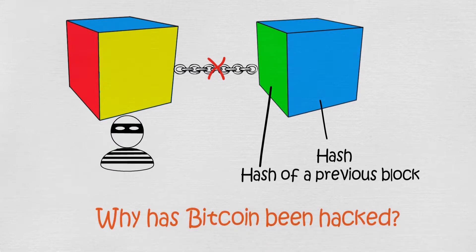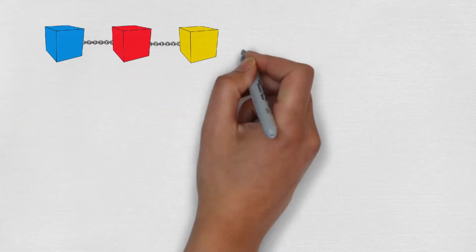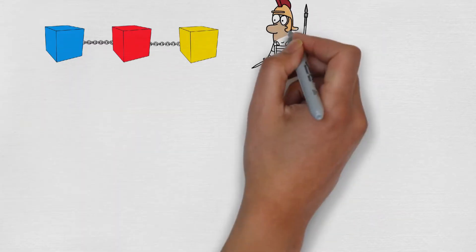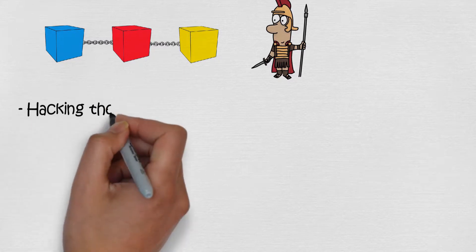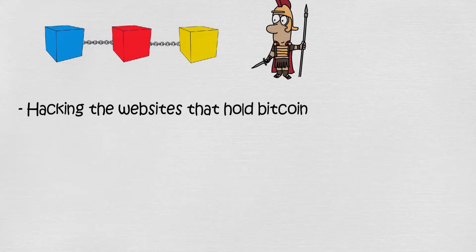But why has Bitcoin been hacked then? When Bitcoin gets hacked, it's not the blockchain that gets hacked. Because hackers know it's nearly impossible to hack blockchain, they are hacking websites that hold people's Bitcoin.